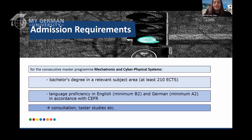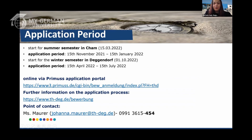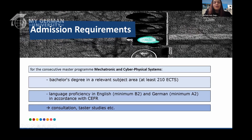To apply, you need a bachelor's degree in a relevant subject area — it doesn't have to be mechatronics; mechanical engineering, electrical engineering, or computer science all qualify. You need at least 210 credit points, though 180 is also acceptable if you have practical work experience or internships, which can contribute up to 30 additional credits to reach the required 210.